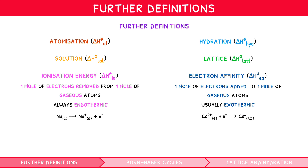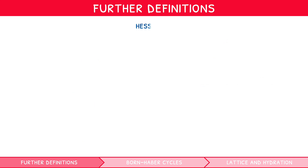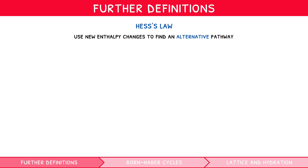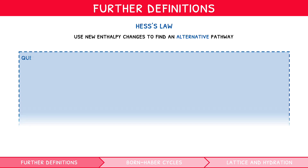So how do these enthalpy changes relate to exam questions? Questions typically test your understanding that bond enthalpy values require substances to be in a gaseous state. Therefore, one must apply Hess's law and use these new enthalpy changes to find an alternative pathway, converting species to a gaseous state so that bond enthalpies can be used. Application of multiple enthalpy changes in this way is known as a three-stage energy cycle — they come up a lot in exams, so let's look at one together.